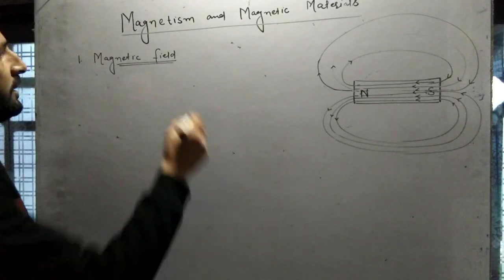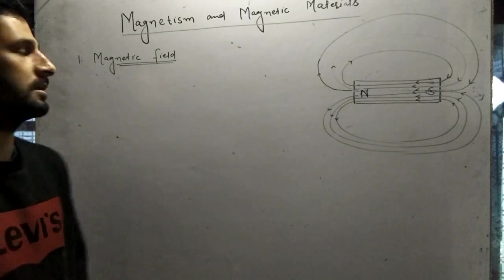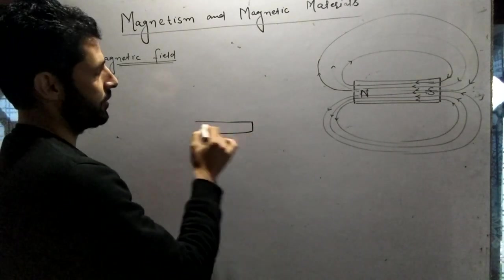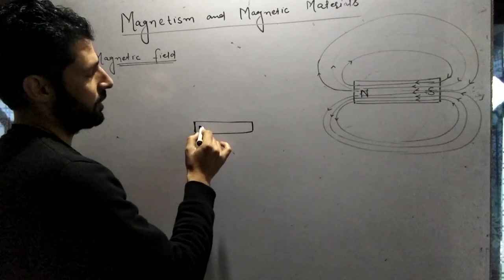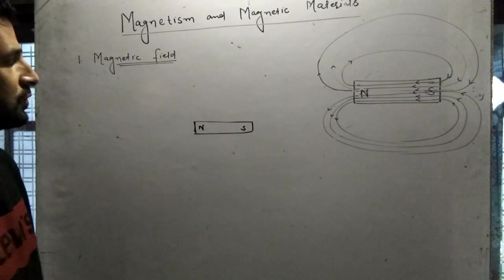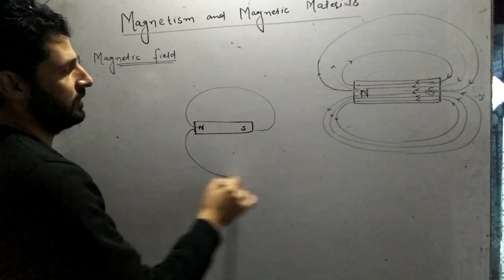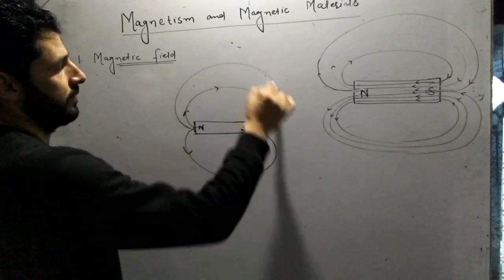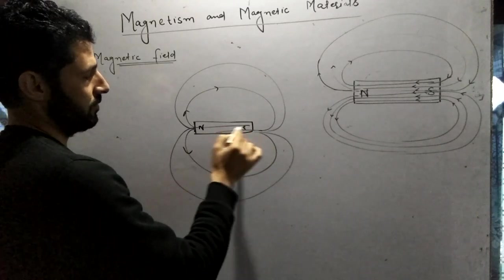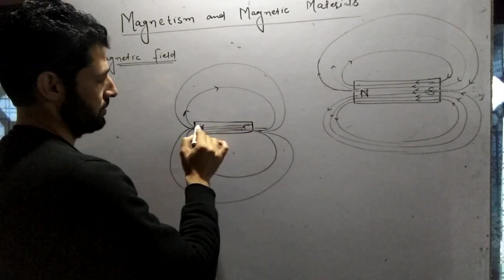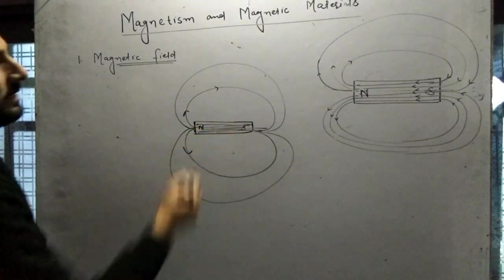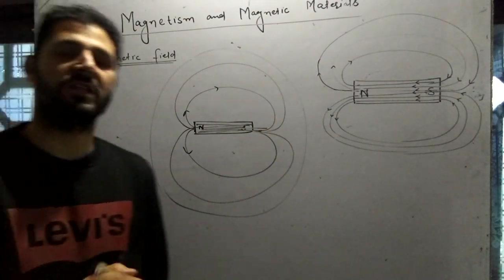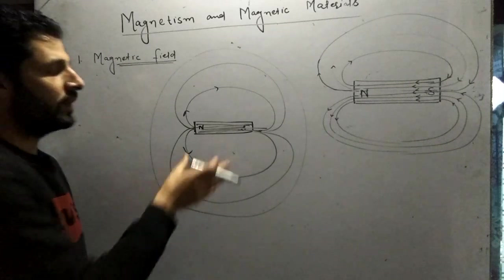The magnetic field is the space around a magnet or current-carrying conductor. For example, we have a bar magnet with a magnetic north and magnetic south pole. This small bar magnet forms a space around it within which its influence can be found. Inside, the field lines go uniformly. This space around the magnet within which its influence can be found is what we call the magnetic field.